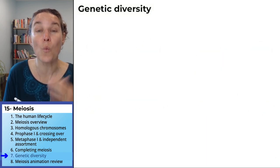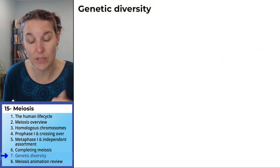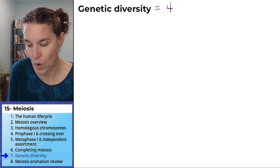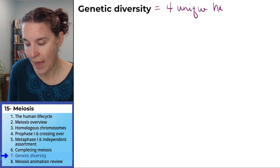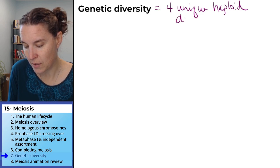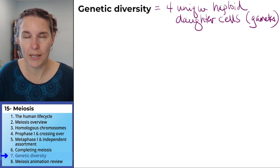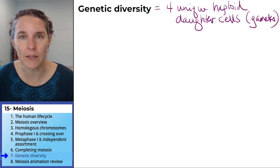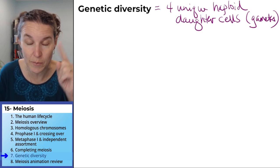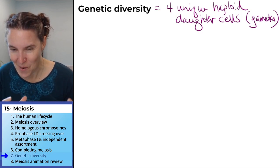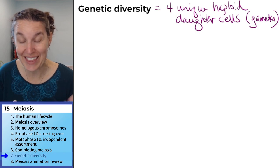Let's make a list of all the ways that meiosis results in genetic diversity. Because the point is, we end up with four unique haploid daughter cells. And those, my friends, are gametes. So if independent assortment and the eight million different gametes you can come up with from independent assortment alone blows your mind, multiply that number of possibilities with all of this.